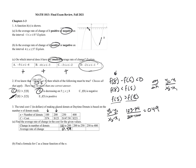Following the same process for the rest: 250 minus 200 on the bottom, 147.5 minus 123 on top — also 0.49. And then 400 minus 250 on the bottom, 221 minus 147.50 on top — again 0.49. So we have the same slope between each of these intervals, meaning we have a constant rate of change.